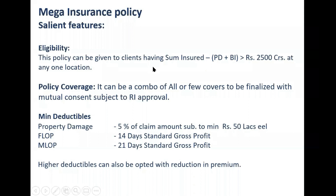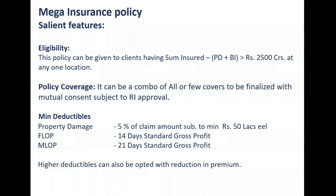Salient features - first of all, the eligibility criteria. Even at the cost of repetition, I would explain once again where it can be given and what we mean by mega insurance policy. There are a lot of myths about it. Mega means a large risk, and large risk is defined where the property sum insured at any one location is above 2500 crores. For property policies it is 2500 crores, and in respect of liability policy it is 100 crores. These are the two limits prescribed by IRDA.